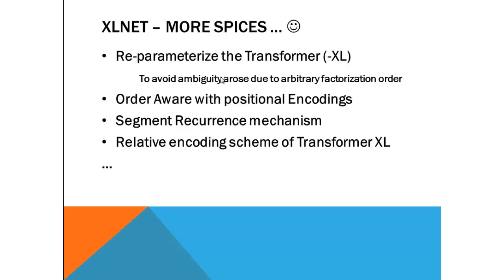We will talk about how XLNet is order aware in more detail. Another improvement added in XLNet is re-parameterizing the transformer to avoid ambiguity which arises when you feed tokens in a permutation or arbitrary way to the transformer. What it does is re-parameterize the transformer by giving it positional encodings so that the transformer is aware which token actually lies where. It also uses two more techniques: the segment recurrence mechanism and relative encoding scheme from Transformer-XL.